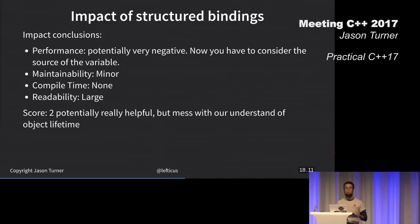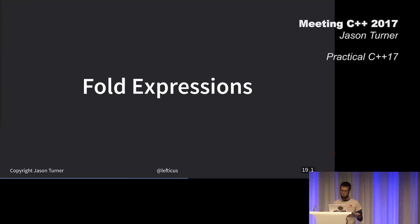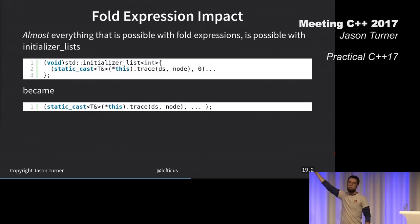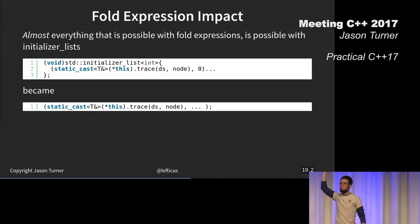Next up I've got fold expressions. I need to start moving faster. My problem with fold expressions is that I was already using the initializer list trick to emulate fold expressions. Have we all seen the initializer list trick? That's what it looks like.